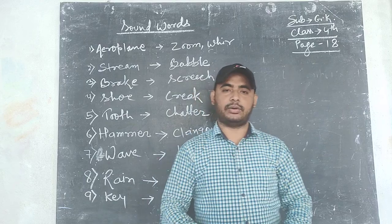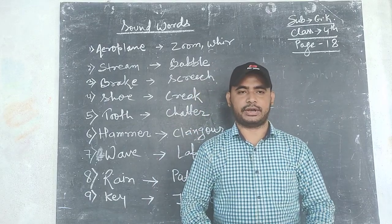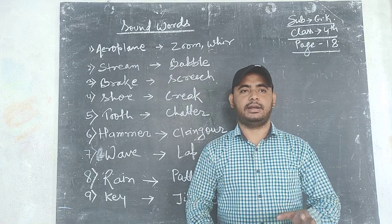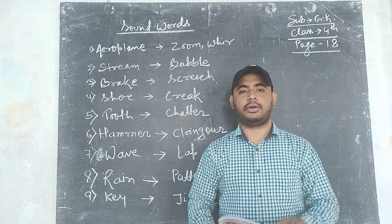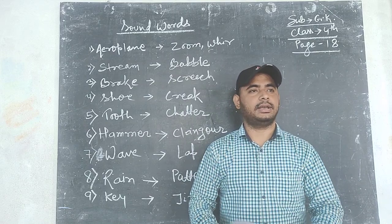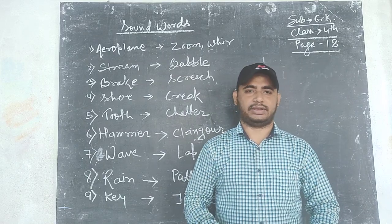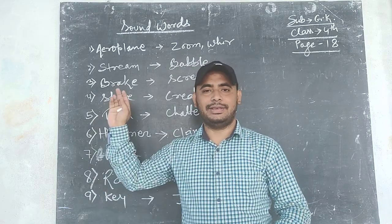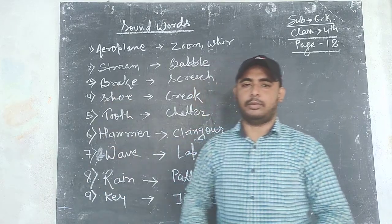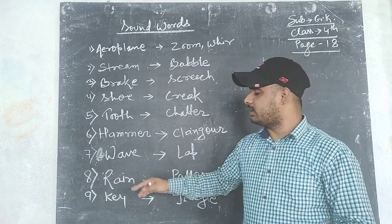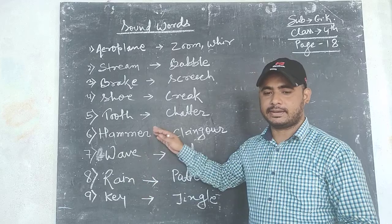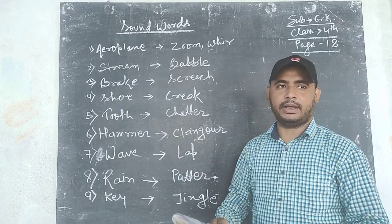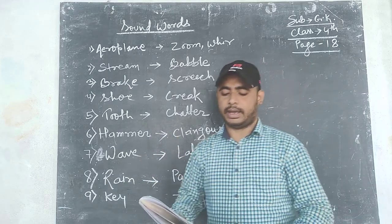We need to find the name of the sounding words and match the things with the sounding words. As you can see on the board, we have written the answers for numbers 10 to 15, and in the book we have written the numbering.